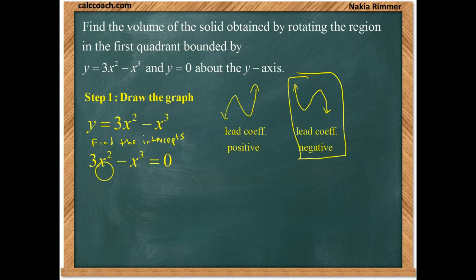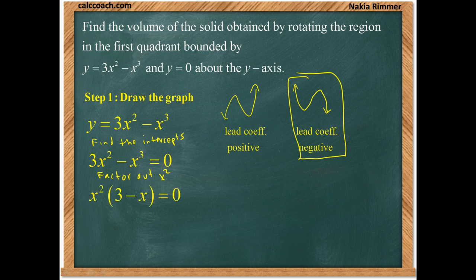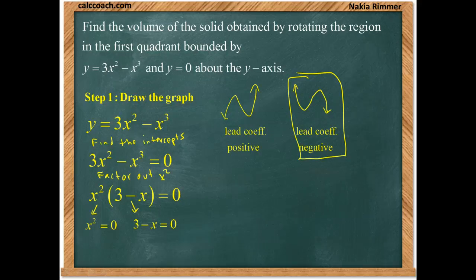What we are going to do is factor out the x-squared that both terms have in common. That will give you x-squared times the quantity of three minus x, and this is set equal to zero. So either x-squared equals zero or three minus x equals zero. If x-squared is zero, that of course means that x is zero. If three minus x is zero, that means that x is three.